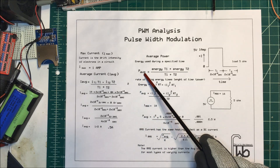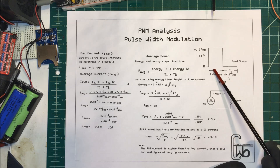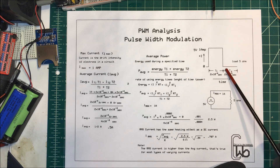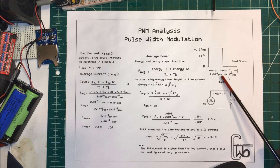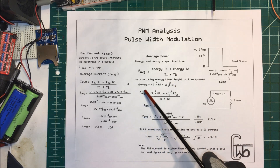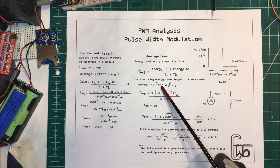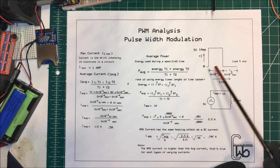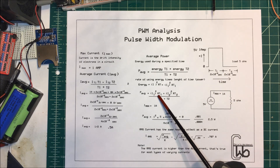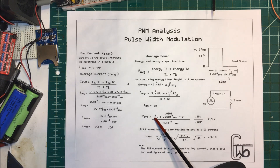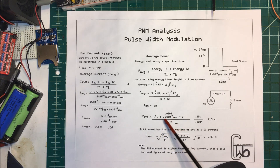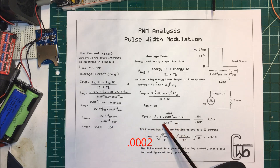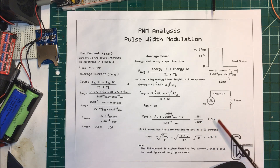What's our average power? Average power equals the energy times the time in this cycle, plus the energy times the time on the other side — which is zero here — divided by the total amount of time. Energy equals current squared times resistance times time. So we have 1² times 5 ohms times 0.002 seconds, which comes out to 0.001. We divide that by 4×10⁻⁴, which is 0.0004, and we get 2.5 watts. That's our average power.